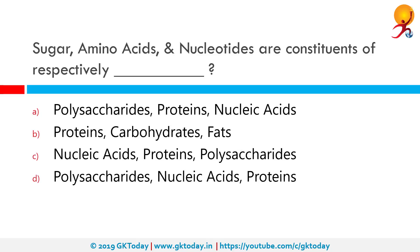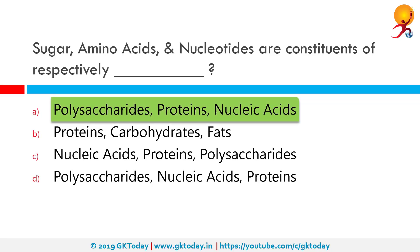Sugar, amino acids and nucleotides are the constituents of which of these options respectively. The correct answer is sugar for polysaccharides, amino acids for proteins and nucleotides for nucleic acid. Simple sugars are also called monosaccharides whereas longer chains are called polysaccharides. Amino acids are the building blocks of proteins, whereas nucleic acids RNA and DNA are made up of a series of nucleotides.